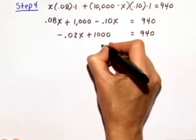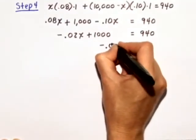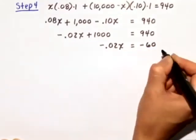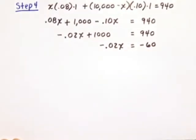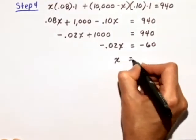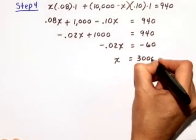We'll subtract 1,000 from both sides, negative .02x equals negative 60. And when I divide both sides of the equation by negative .02, I get x is equal to $3,000.